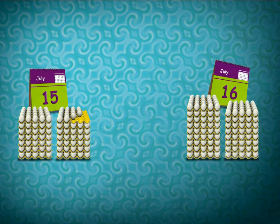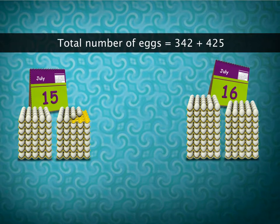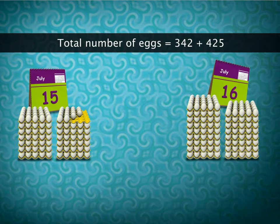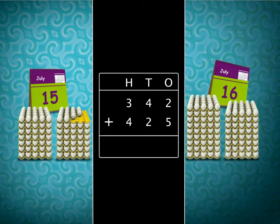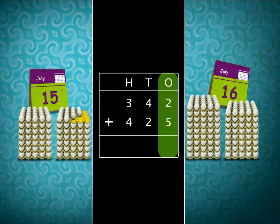Addition of course. To find the total number of eggs collected, we have to add 342 and 425. Let's first write the two numbers in columns of hundreds, tens and ones and then add. We always begin adding from the ones column. Adding the digits in the ones column, we get 7 as the answer.